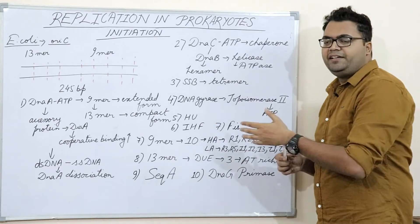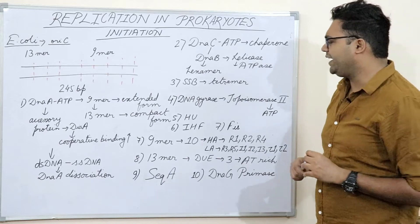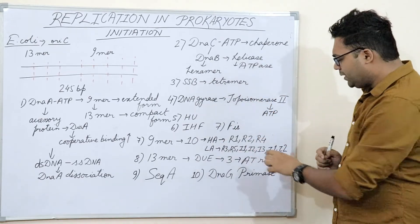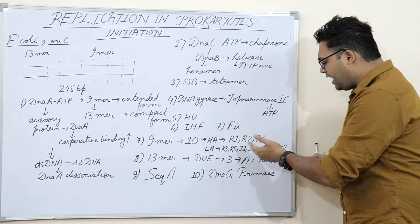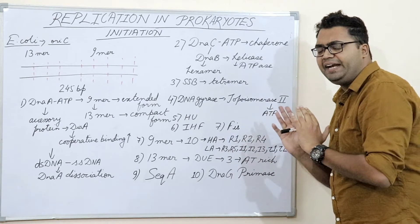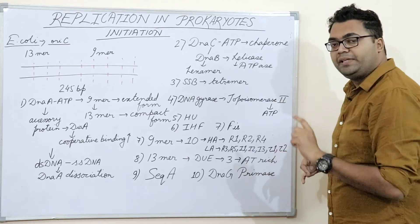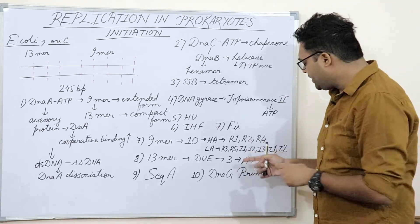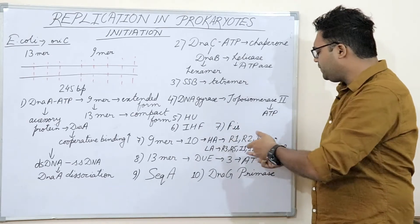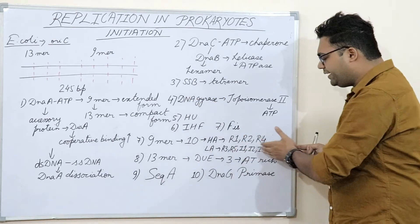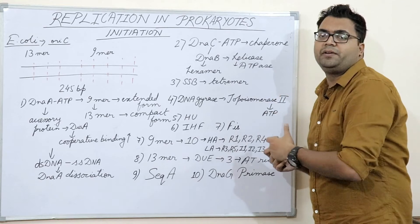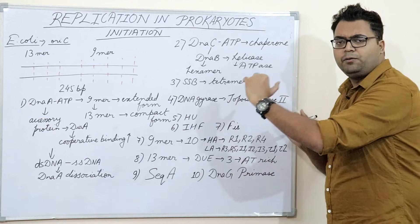IHF — integration host factor — is also responsible in a variety of ways. Most relevantly, there are specific I sites in the 9mer sequences. Analyzing the R group, I group, and tau group: all R group sites can bind both DnaA-ATP and DnaA-ADP forms, but I group and tau group sites only bind the DnaA-ATP form. IHF activates the binding of DnaA to the lower-affinity I sites.